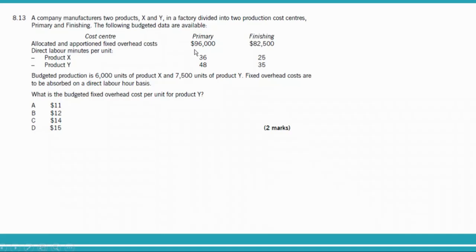To calculate OAR based on labor hours, we need total labor hours for each department. In the primary department, product X takes 36 minutes and product Y takes 48 minutes. We convert minutes to hours and multiply by production volume to get total labor hours for each department, then divide the overhead by those hours.